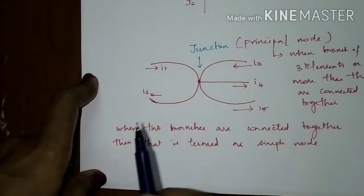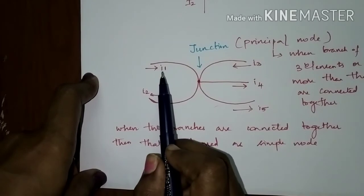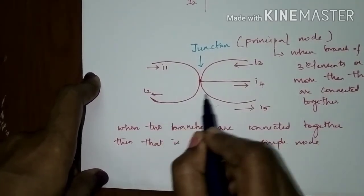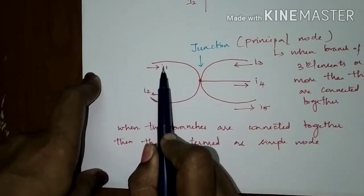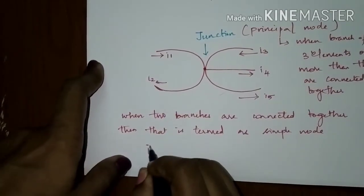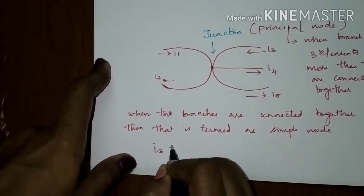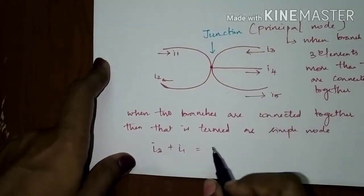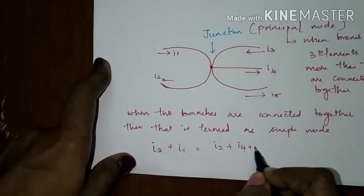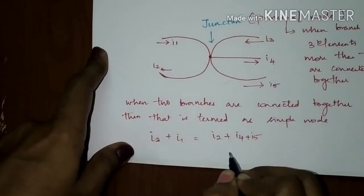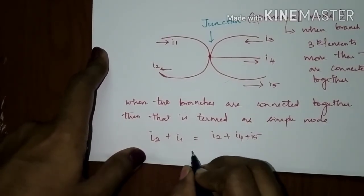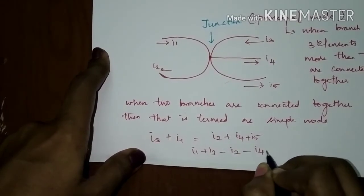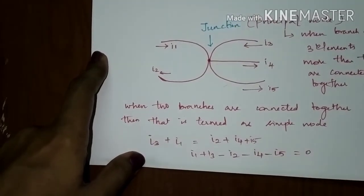In this figure, it is a principal node. According to KCL, the current entering would be equal to the current leaving. The entering currents are I1 and I3, so I1 plus I3 equals the leaving currents I2, I4, and I5. So I2 plus I4 plus I5. If you sum entering and leaving currents, the value equals zero: I1 plus I3 minus I2 minus I4 minus I5 equals zero.